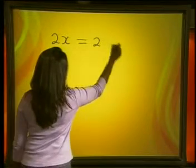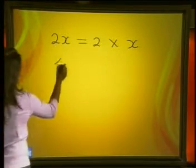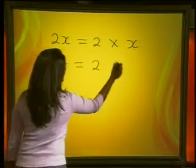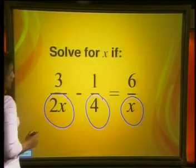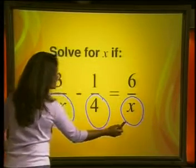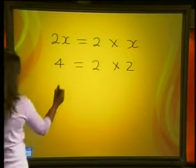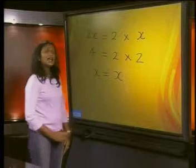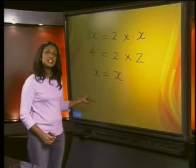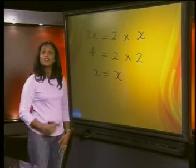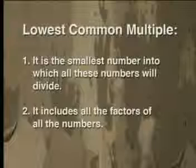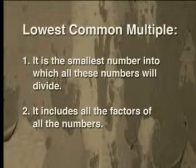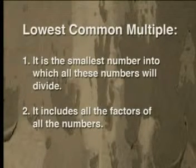So, 2x is equal to 2 times x. 4 is equal to 2 times 2. And if we go back to our question, we see that x is already in its simplest form, so we can write x is equal to x. Now, what is the lowest common multiple of these numbers? Remember 2 facts about the lowest common multiple: 1. It is the smallest number into which all these numbers will divide. And 2. It includes all the factors of all the numbers.